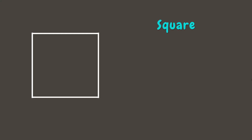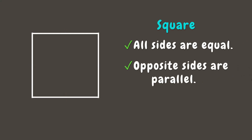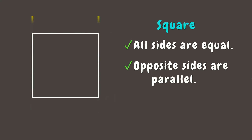Now let's try to change the measure of its length — like this. Do you know what quadrilateral this is? If you said square, you are right! In a square, all of its sides are equal. Like the rectangle, its opposite sides are parallel, and it also has four right angles.